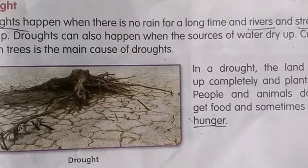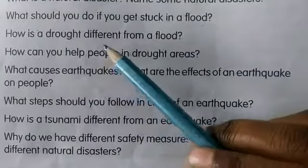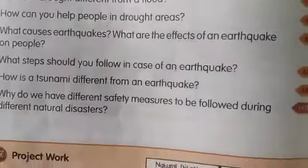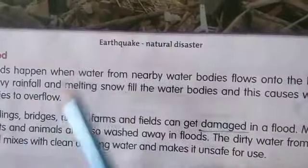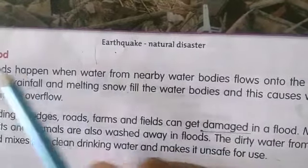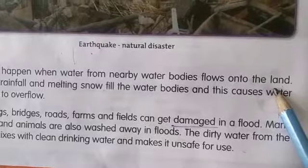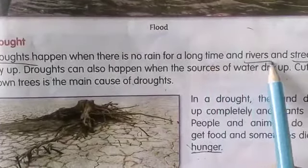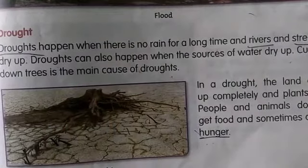Now take out practice questions, page number 158. Today you are going to complete questions three and four. How is a drought different from a flood? Make two columns — flood and drought. In the flood column write: floods happen when water from nearby water bodies flows into the land. In the drought column write: droughts happen when there is no rain for a long time and rivers and streams dry up.